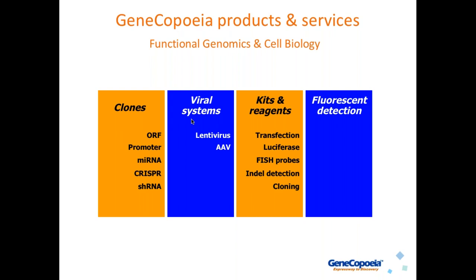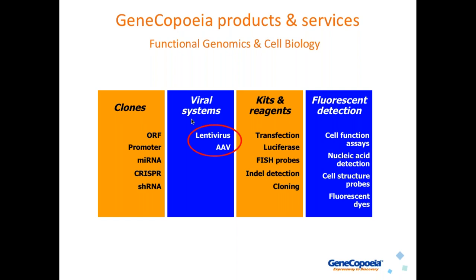Finally, we have a large array of products for fluorescence detection, mainly in the areas of cell function assays — for example, kits for assaying apoptosis in cell types. We have nucleic acid detection reagents for both DNA gel stains and nucleic acid quantitation, cell structure probes with stains for different organelles like mitochondria, nucleus, and lysosome, and a number of fluorescent dyes for conjugating to things like antibodies. But of course, you're here to learn about viral systems, so let's talk about our lentivirus and AAV.